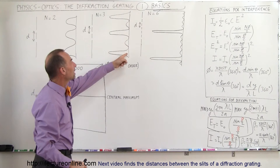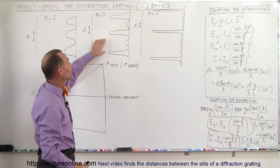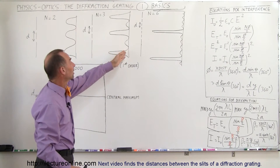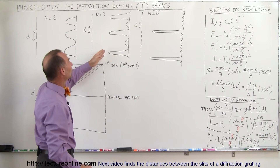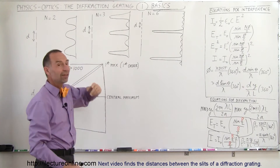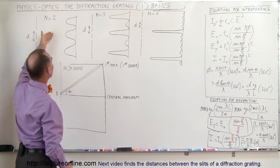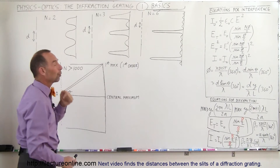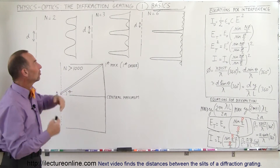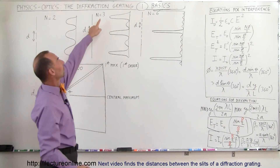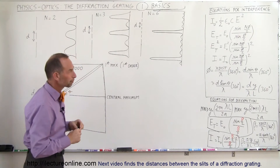The peak intensity was greater with a greater number of slits. The intensity with three slits was nine times the intensity of a single slit, where the intensity of two slits was four times. We found that intensity is equal to the number of slits squared times the intensity of a single slit.